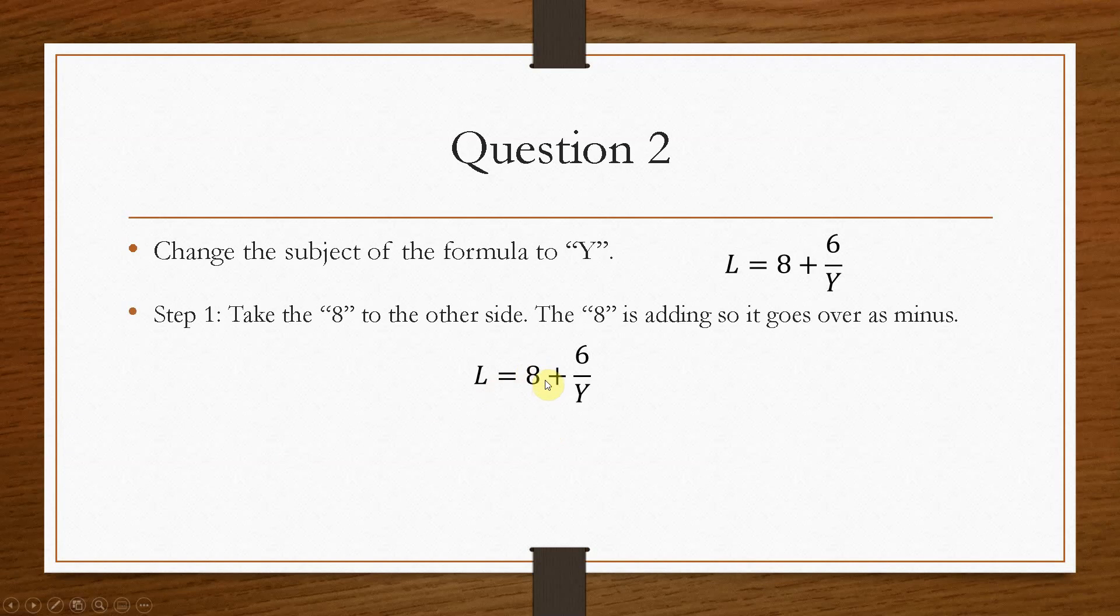Now it's easier to remove the 8 first than to remove the 6, because the 6 is involved with the y. So we try and get rid of everything that isn't directly involved with the y. This 8 really has nothing to do with the y, so we can take that across first. Now it's plus 8 on that side, so it has to go over as minus. Your equation now becomes l minus 8 equals 6 over y.